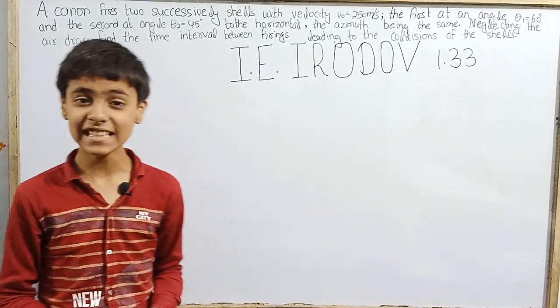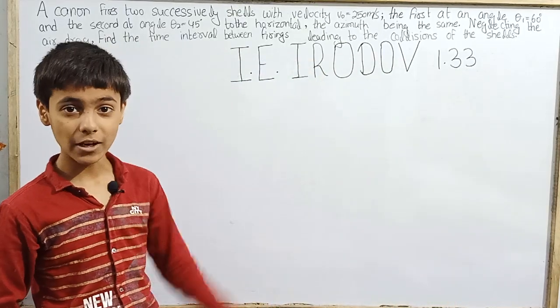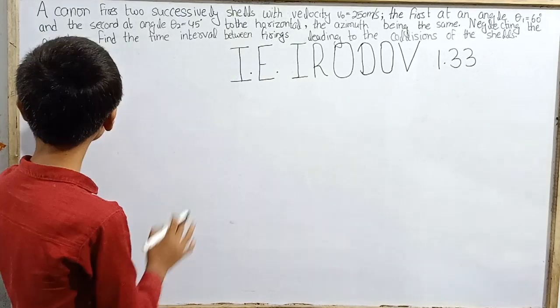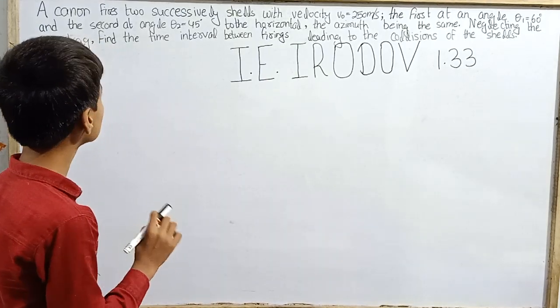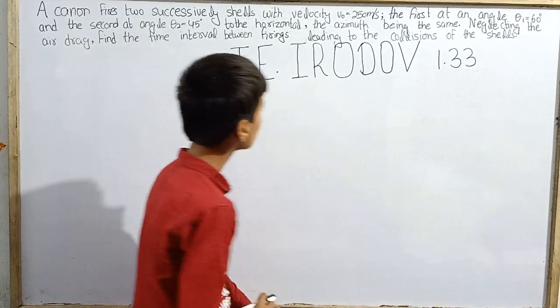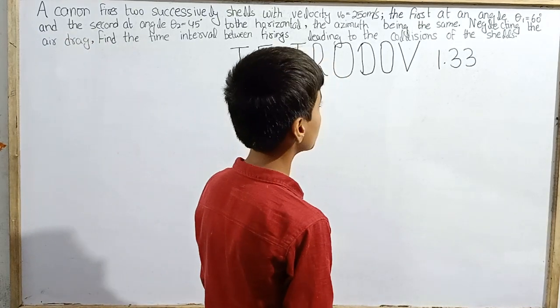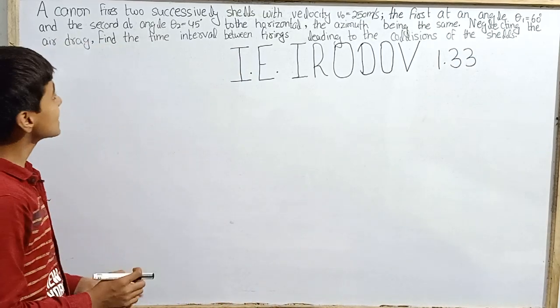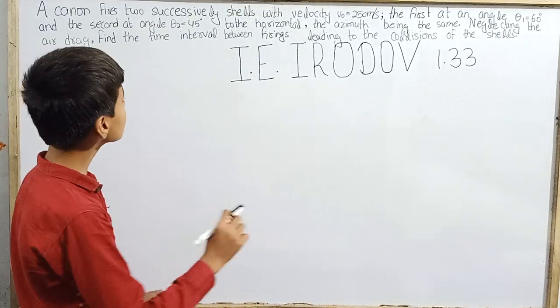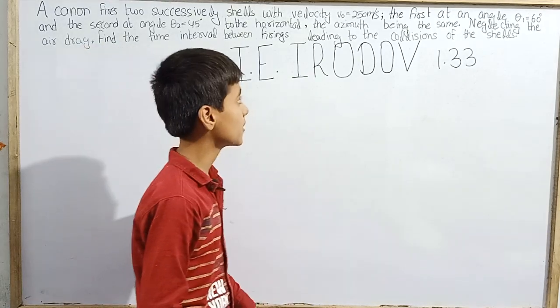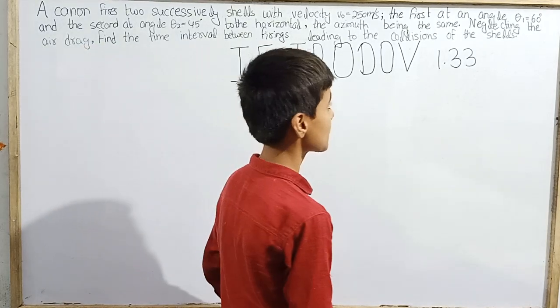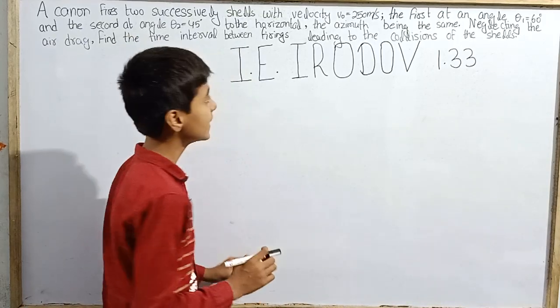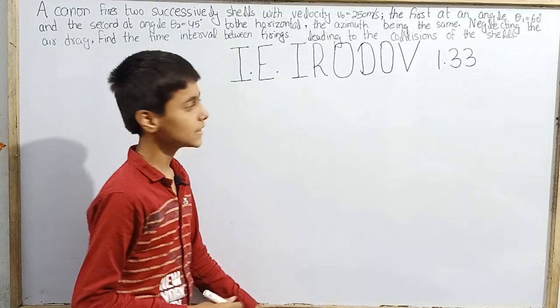Hello everyone, today we are back with IE Irodov question number 1.33. The question is: a cannon fires two successive shells with velocity V₀ equals 250 meter per second, the first at angle θ₁ equals 60 degrees and the second at angle θ₂ equals 45 degrees to the horizontal, the azimuth being the same. Neglecting air drag, find the time interval between firings leading to the collision of the shells.